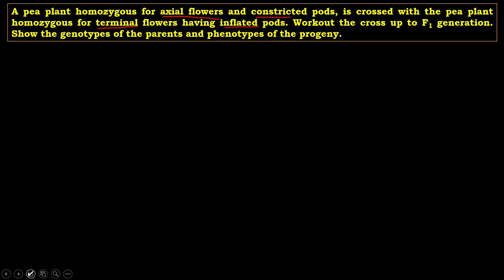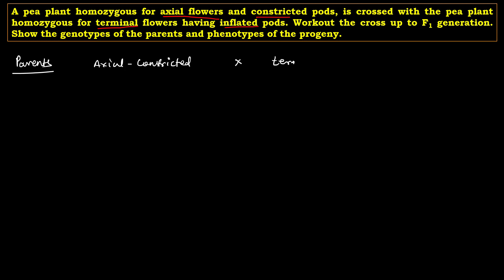So this is the question we have to solve. Let us first find out what is given. The parents are: one with axial flowers and constricted pod, crossed with terminal flower with inflated pod. You have to understand that the axial position of the flower is a dominant trait, so we will go with capital A, capital A as the genotype for the axial position.